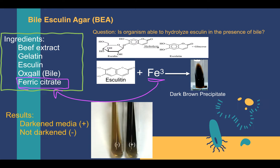Let's look at the results you may receive from this test. In the lab, when reading these results, it is helpful to hold the tube up against an uninoculated tube so that color changes can be perceived more readily. The first tube here is not darkened, so this would be negative. The darkened tube indicates a positive result. If there is no blackening, we consider it a negative result.